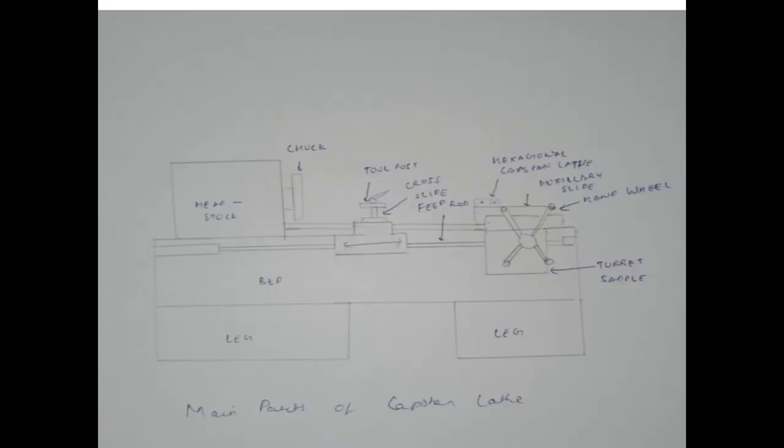Now we will discuss the center part of the capstan lathe. The carriage or chaser saddle is similar to the saddle of an engine lathe. It carries a cross slide on which are mounted two tools, one at the front and the other at the rear or opposite end. Both are usually square tool posts.